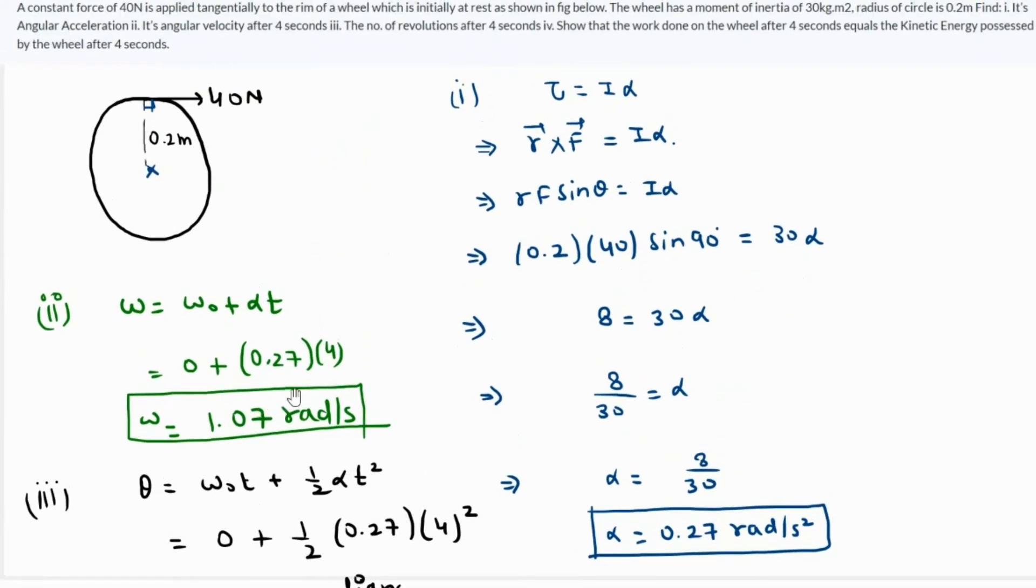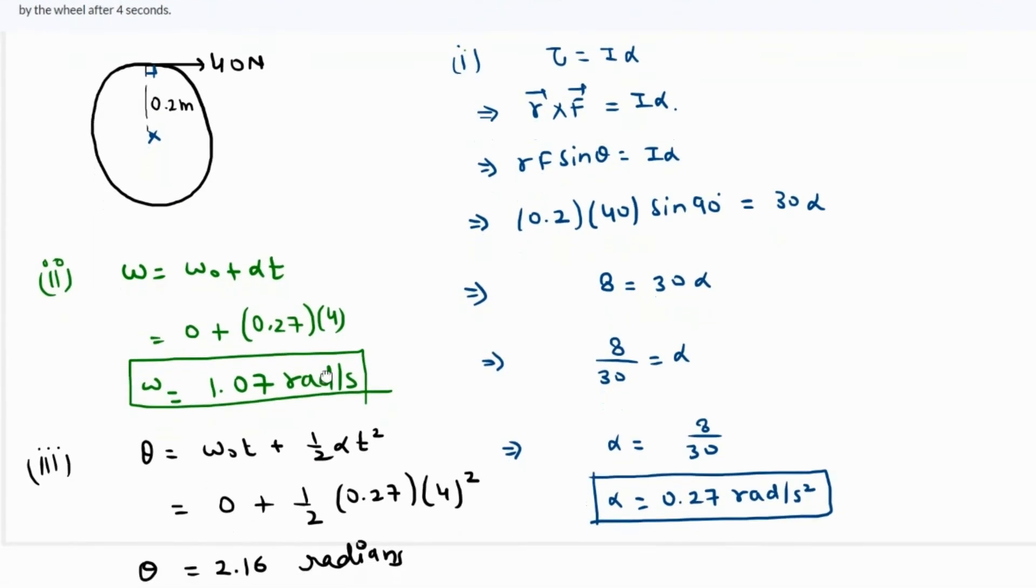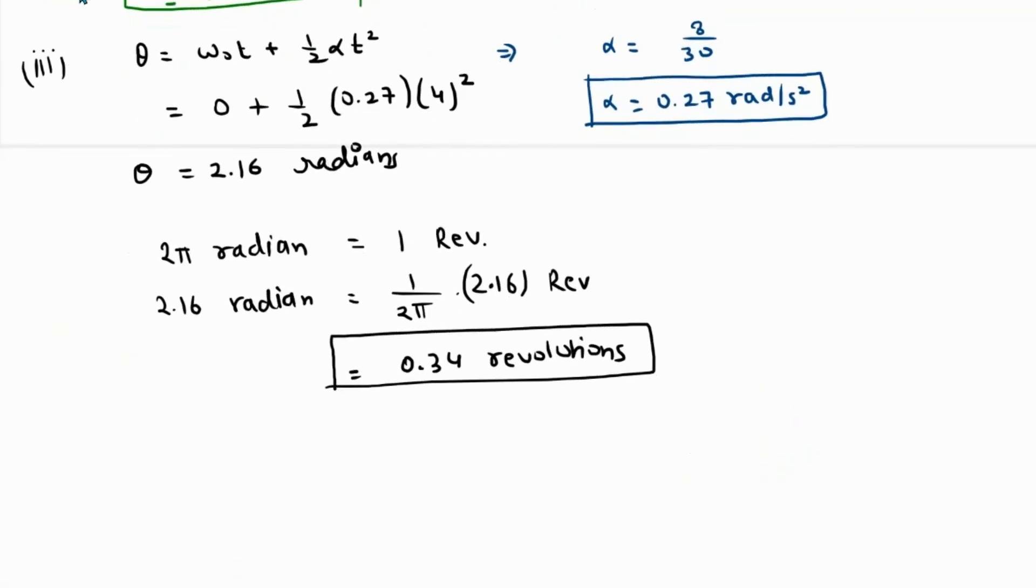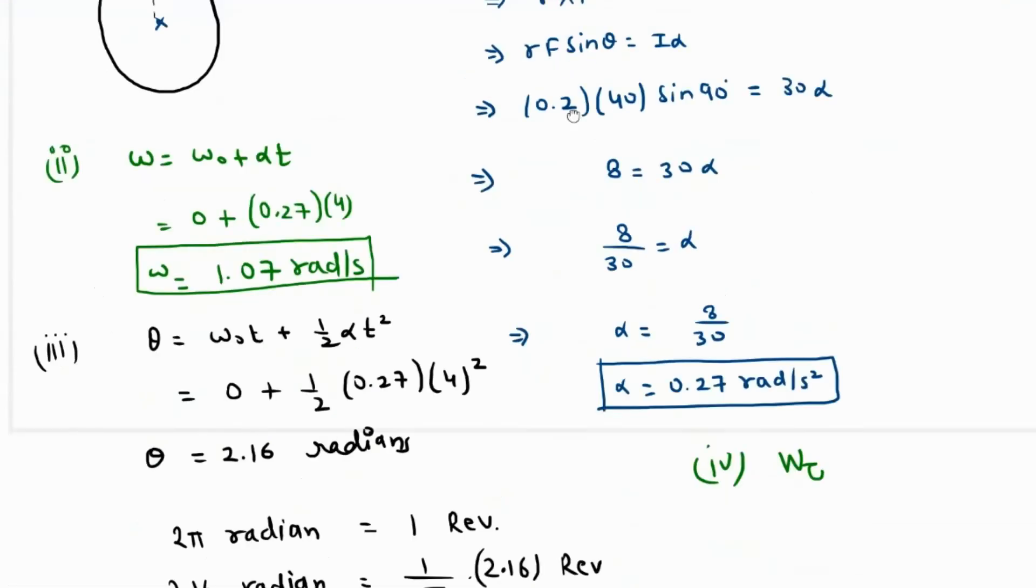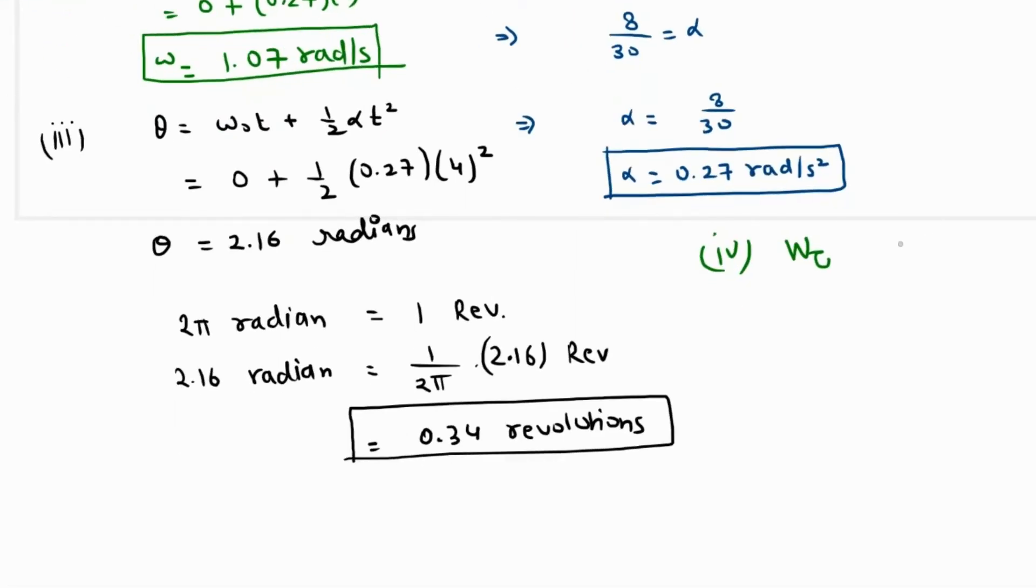In part 4, they're asking to show that the work on the wheel after 4 seconds equals the kinetic energy possessed by the wheel after 4 seconds. Let's find first what is the work done. The work done by the torque is going to be τ · θ, right? And torque is Iα, so that will be Iα times θ.